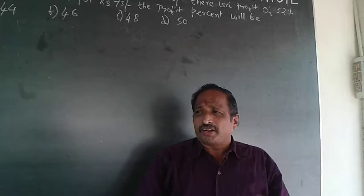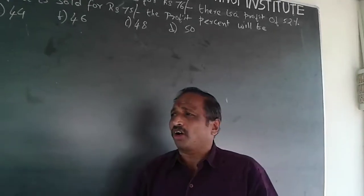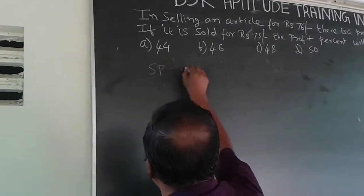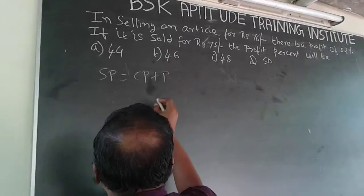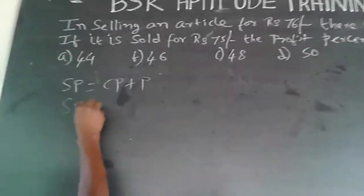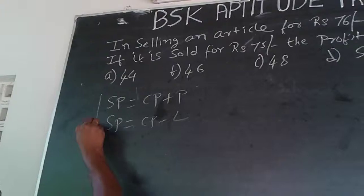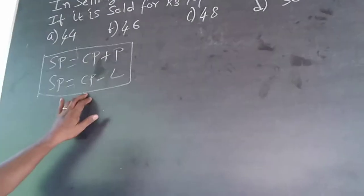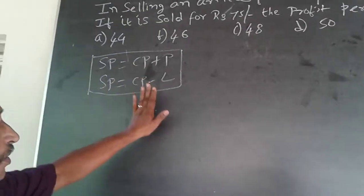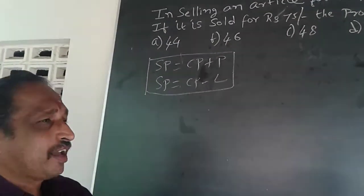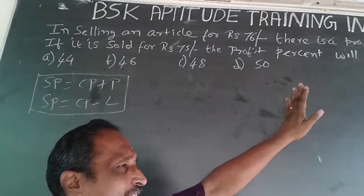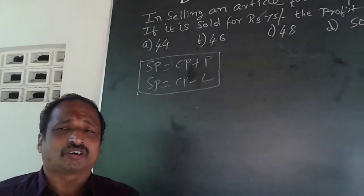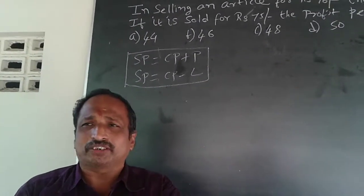As we started, it was a profit and loss problem. When there is no cost price given, selling price will always be equal to Cost Price plus profit in case of profit, and selling price will be equal to Cost Price minus loss in case of loss. This is the base formula. The profit percentage is always on cost price, and similarly, loss percentage is always on cost price.